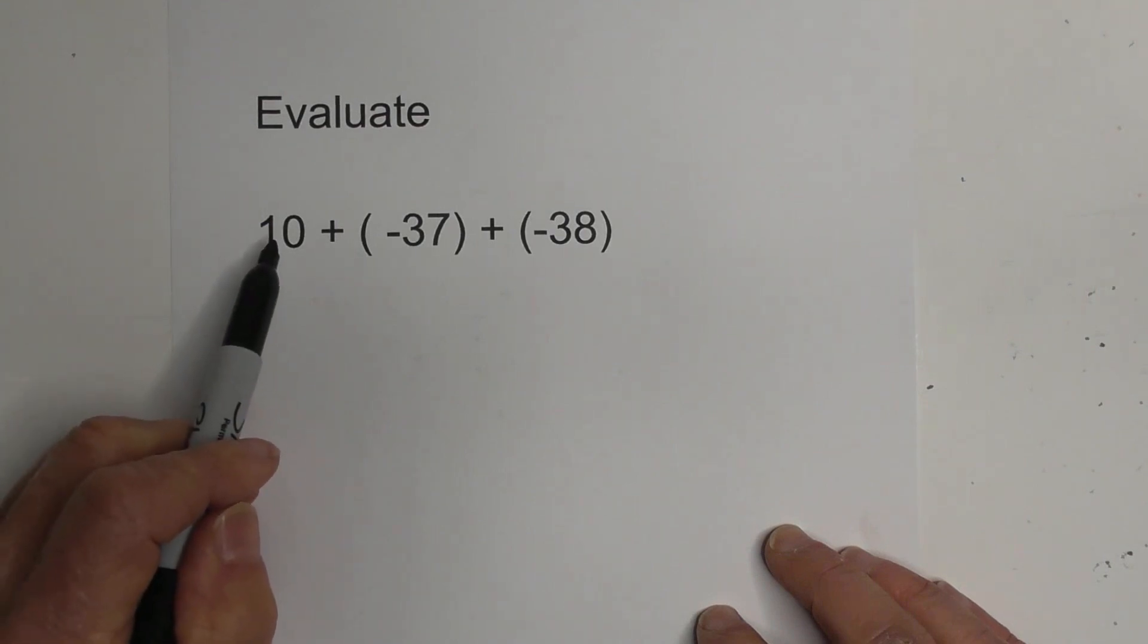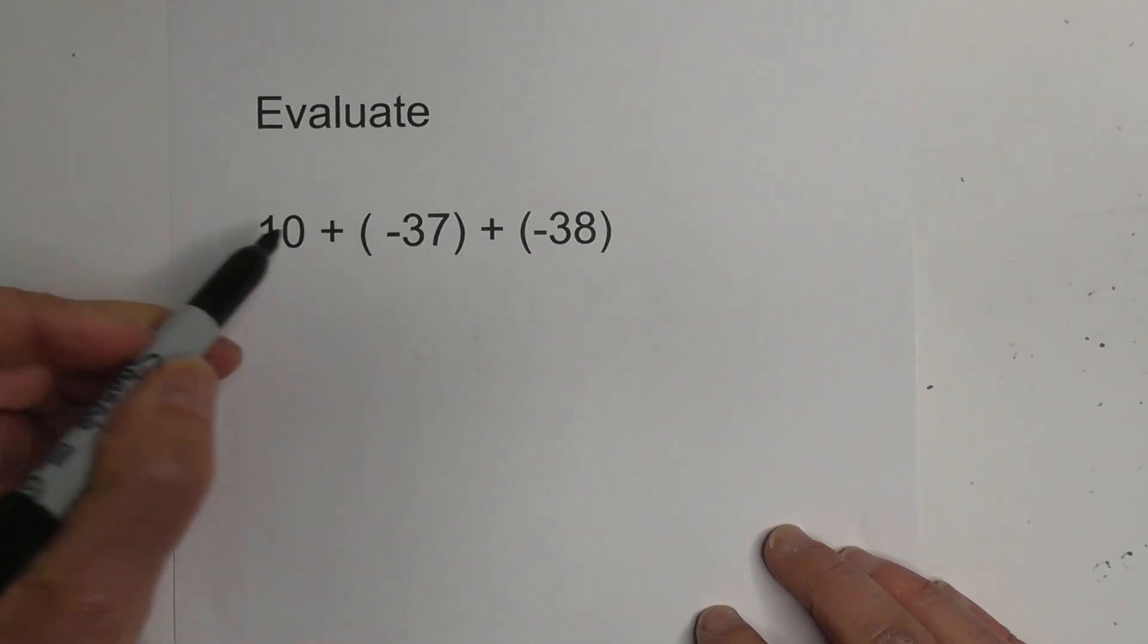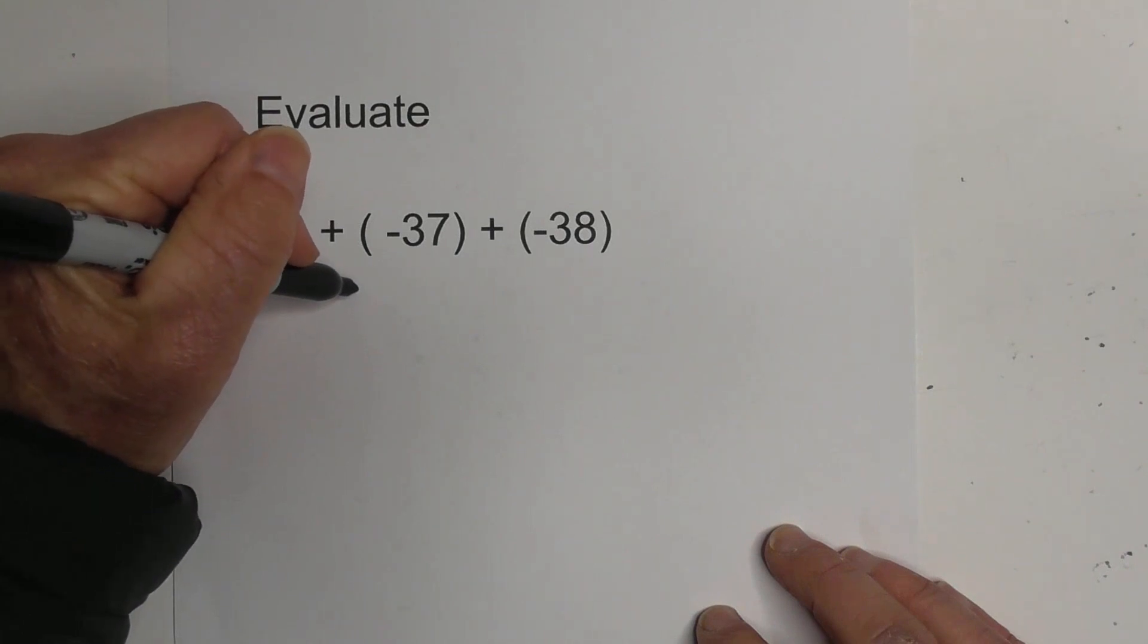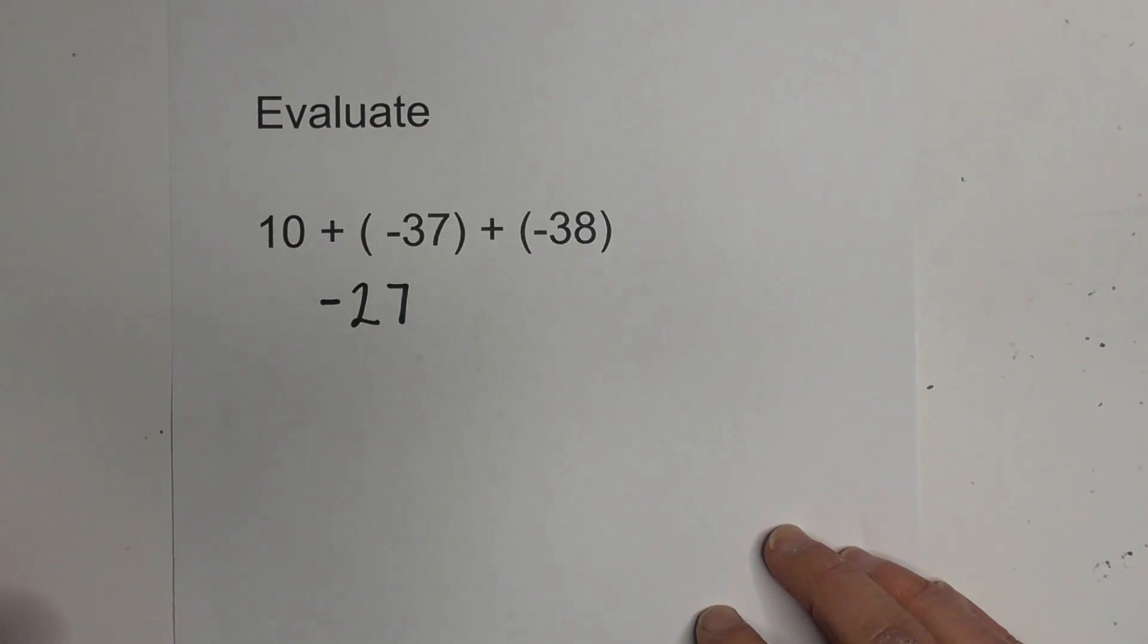Okay, so first we have 10, a positive 10 and a negative 37. It's basically like subtraction. So when you take 10 from negative 37, you get a 27 and we're going to keep the sign of the larger number.